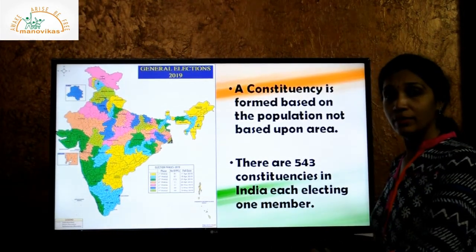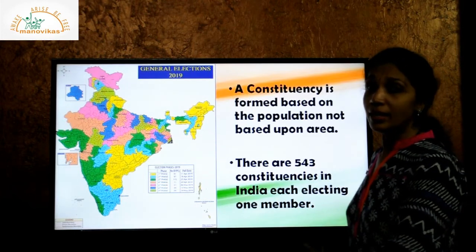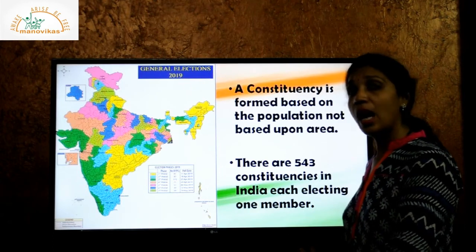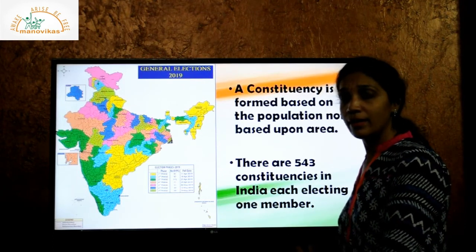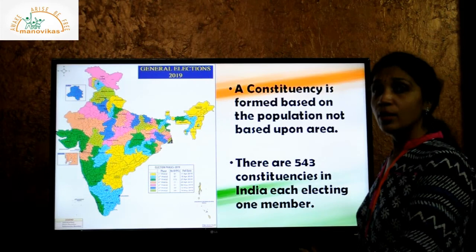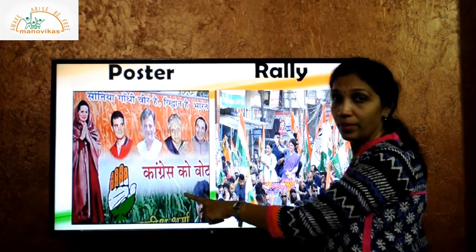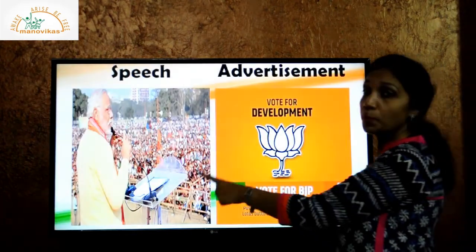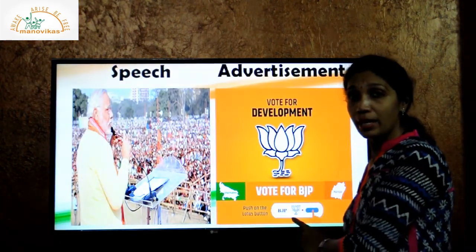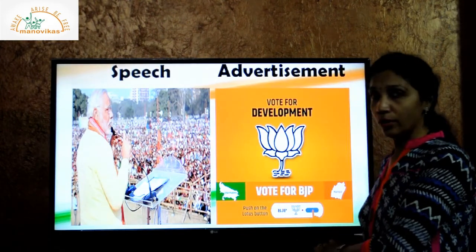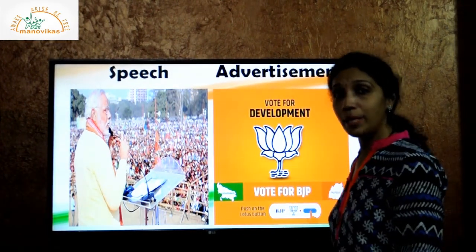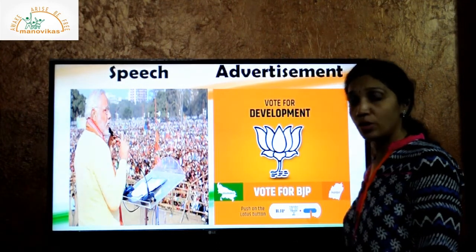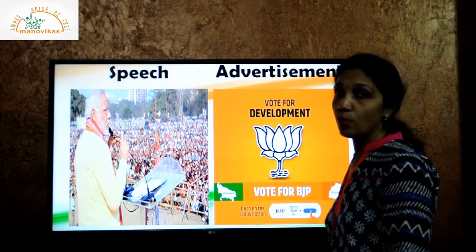Before the election, the nominated candidates ask the people to vote for them. They do this through posters, meetings, rallies, speeches, advertisements, and so on. These help people decide which candidate in their constituency they would like to vote for.